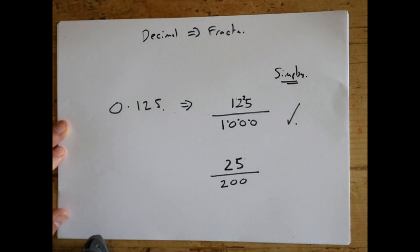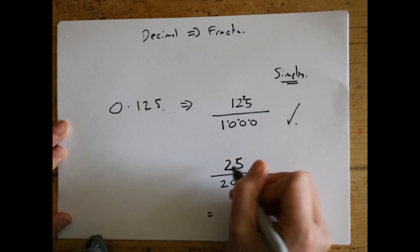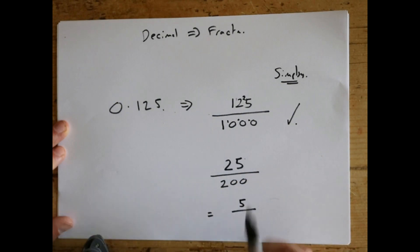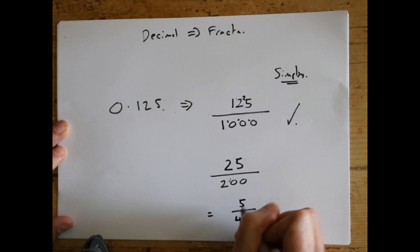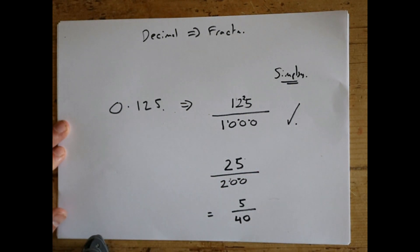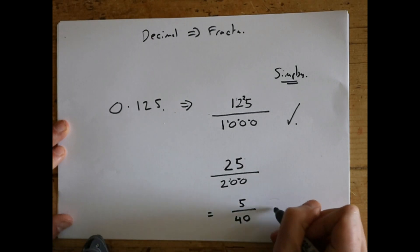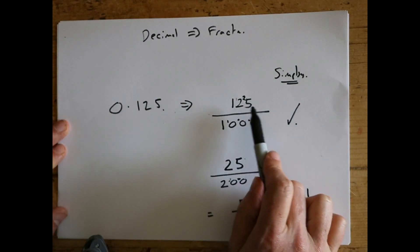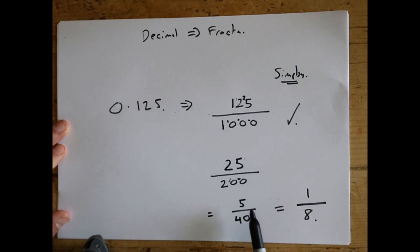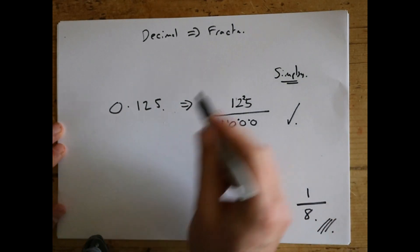We're not quite there yet — we can still see a five and a zero, so let's go again. Divide 25 by five to get five, and divide 200 by five: five into twenty goes four times, remainder zero, five into zero goes zero — so 200 ÷ 5 = 40. Now we're at five fortieths. Again we've got a five and a zero, so one more time: five divided by five is one, and eight times five is forty — so we're back to our one eighth. So 0.125 = 125/1000 = 25/200 = 5/40 = 1/8.